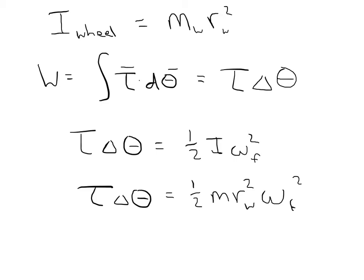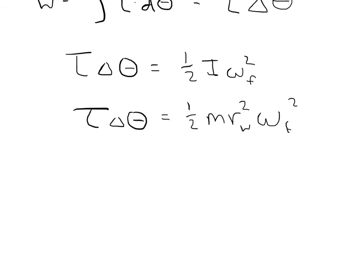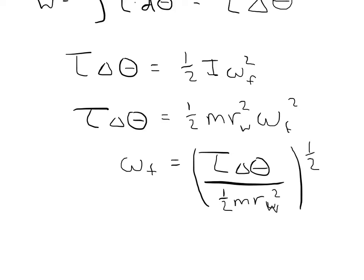Now what I can do is solve this for omega final. I can rearrange this equation and say omega final is equal to T delta theta divided by one-half m r wheel quantity squared, and then all of this to the one-half power.